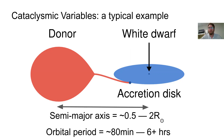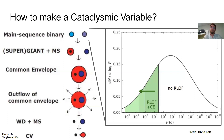Just to give you a sense of the size of these objects: the semi-major axis is typically 0.5 to 2 solar radii, with orbital periods of 80 minutes to about 6 hours, although they can go to 12 hours. So the first question is: how can you make a cataclysmic variable star? You start out with two main sequence stars in an orbital period of typically 2000 days or less, and as you probably know, the more massive star evolves quickest.